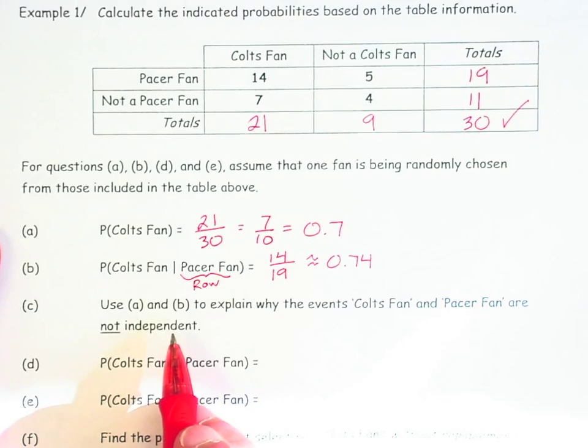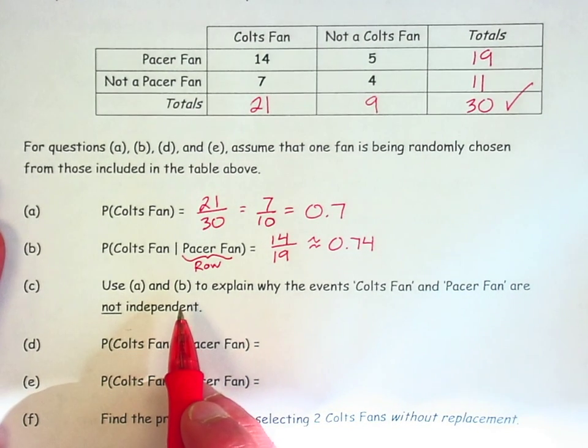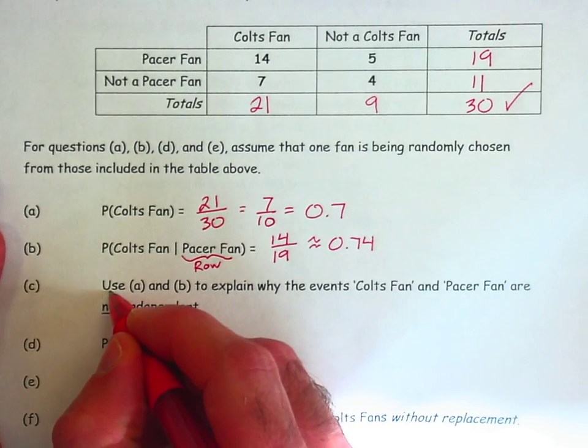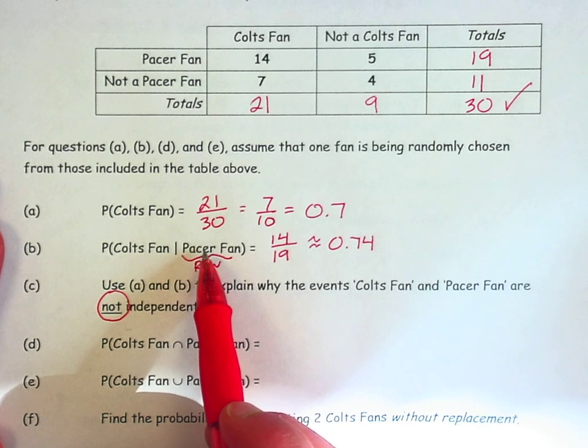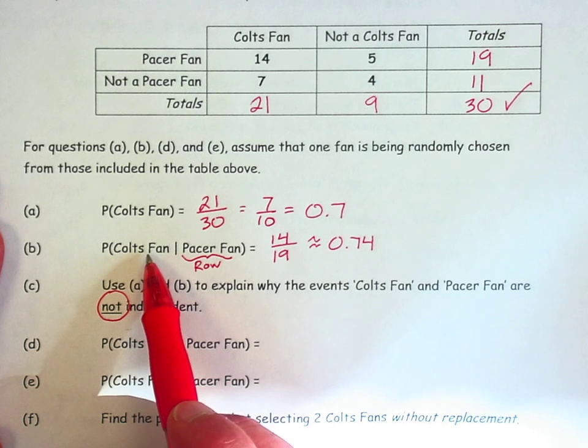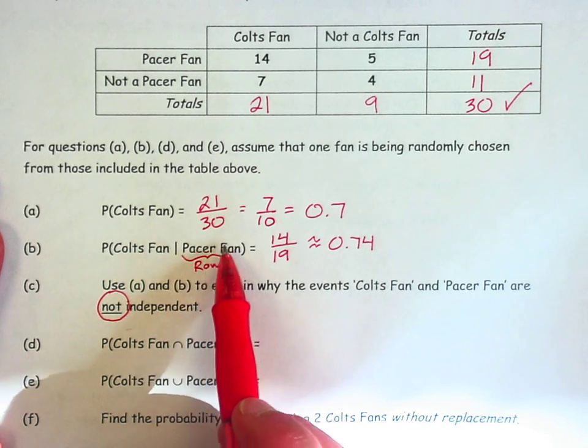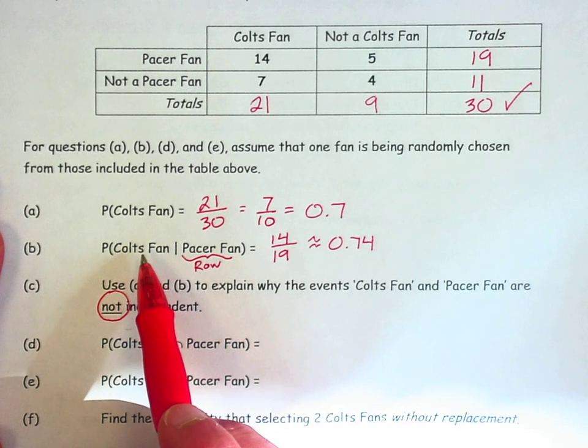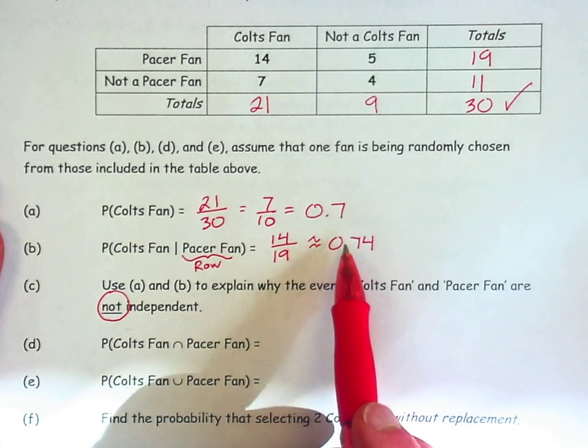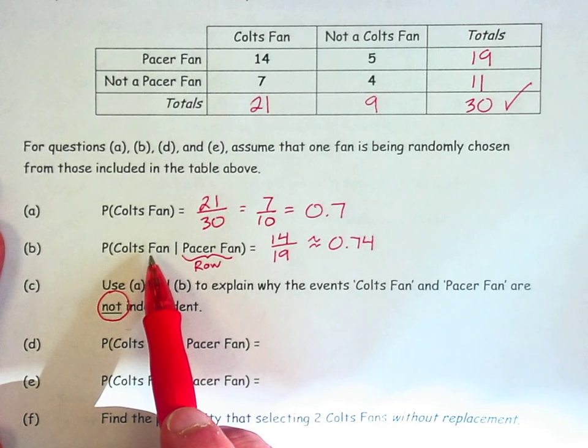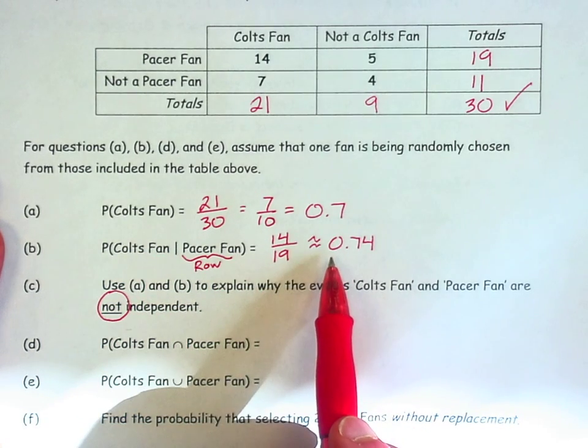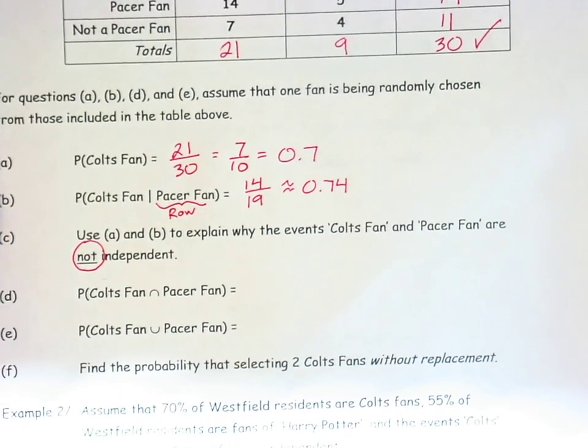And in the next question, it says, use A and B to explain why the events Colts fan and Pacer fan are not independent. Well, if they were independent, it shouldn't matter whether you are a Pacer fan or not. Being a Pacer fan should have no effect on being a Colts fan if they are independent. But notice, knowing that someone is a Pacer fan actually increases the likelihood of being a Colts fan from 0.7 to 0.74. That condition, Pacer fan, should not affect the event Colts fan if these are independent. These are different probabilities. That's what tells me that these events are not independent.